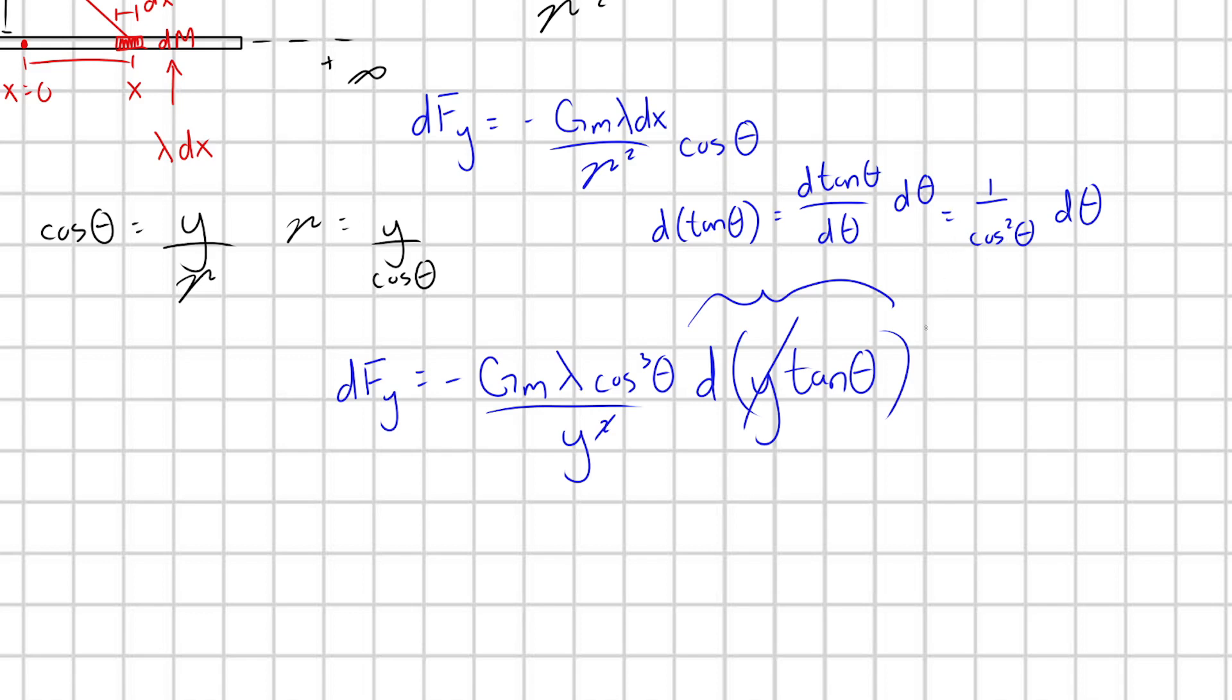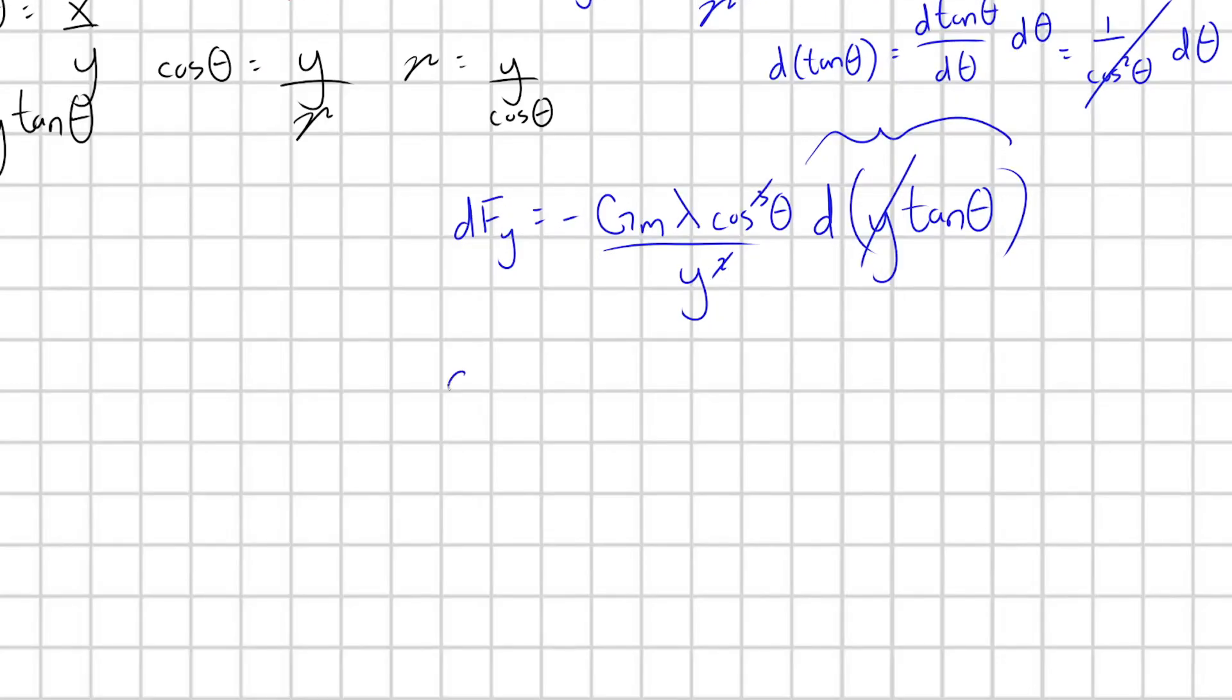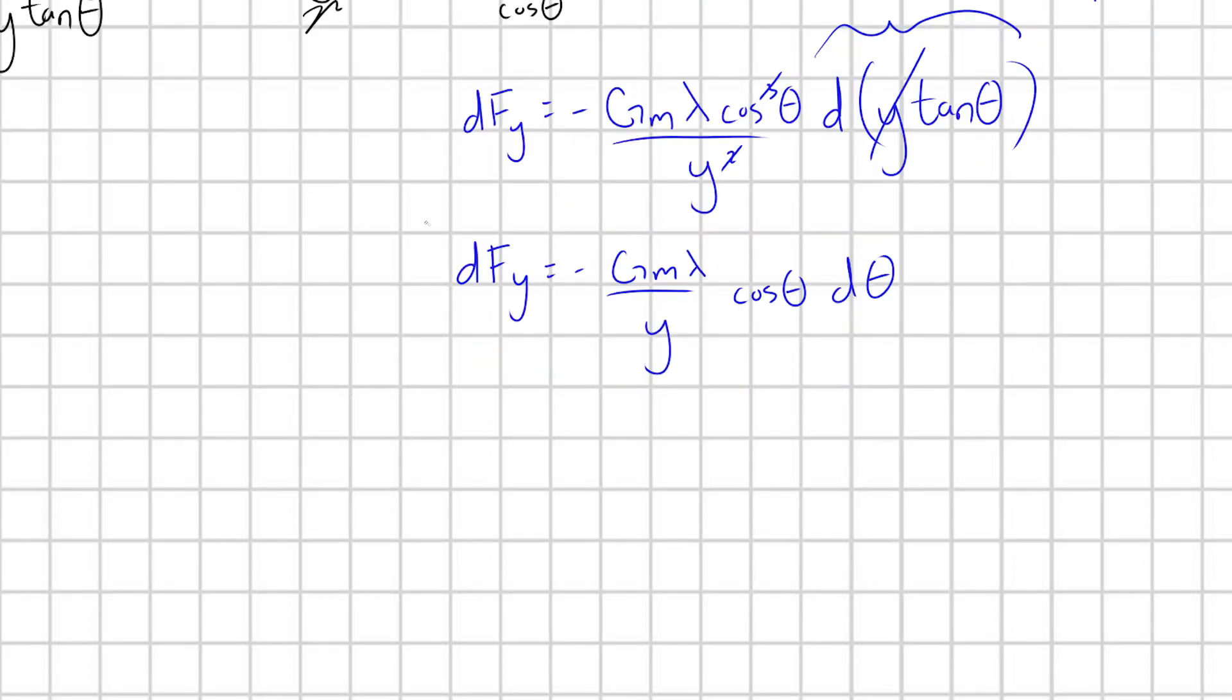And so if we do that, what is the derivative of tan theta with respect to theta? That's secant squared theta or one over cos squared theta d theta. And oh my goodness, look at this. One over cos squared theta. We have cos cubed theta here. This is going to cancel and cancel. We're just going to have one cos theta left over. And so now we're left with this. dFy equals minus G M lambda over Y cos theta d theta. And so let's go ahead and integrate this guy out. We're going to integrate this guy out over our rod, our infinite rod.